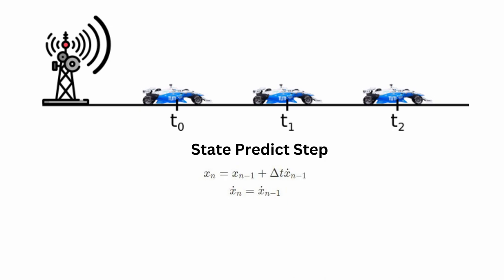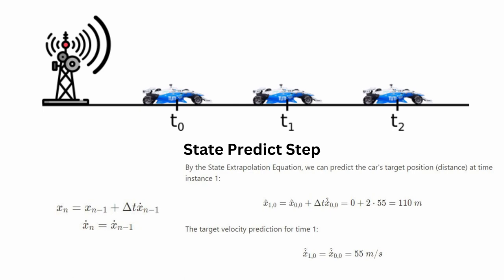This is your state predict step and these equations are your state extrapolation equations — so named because the system extrapolates the current state to the next state. The system of equations varies from case to case depending on system dynamics. Adding numbers: the antenna measures every two seconds, so delta t equals 2. The initial distance x0 equals 0 meters, and the estimated car velocity is 55 meters per second. Based on these, x-hat(1,0) — prediction for time instance 1 based on time instance 0 — equals 0 plus 2 times 55, which is 110 meters. The velocity x-dot-hat(1,0) remains 55 meters per second, since we assumed constant velocity.